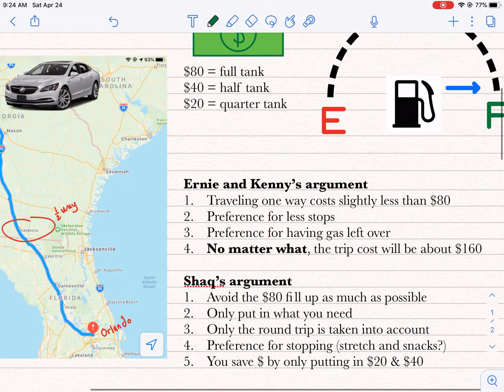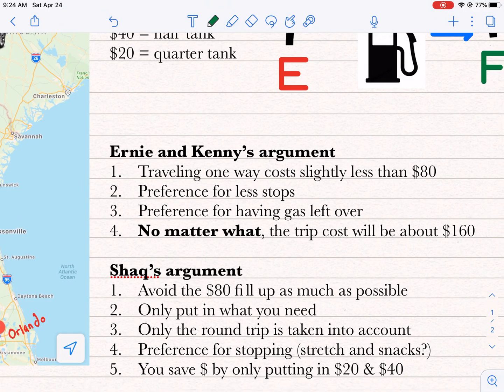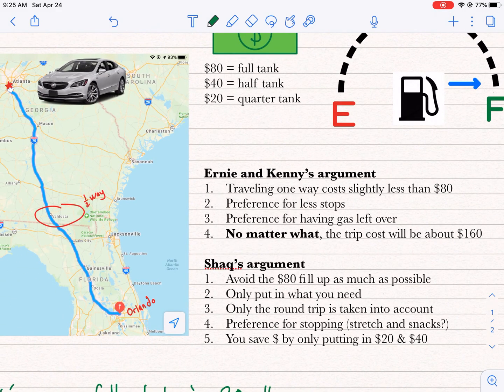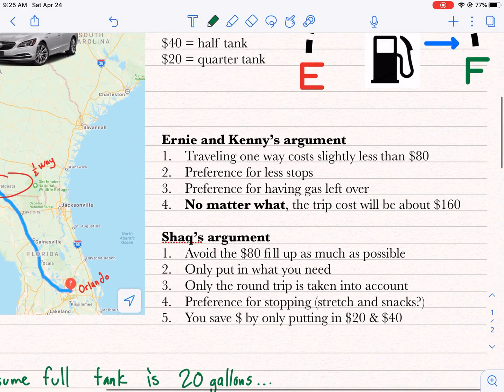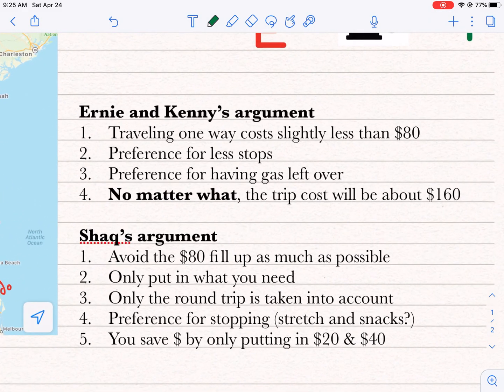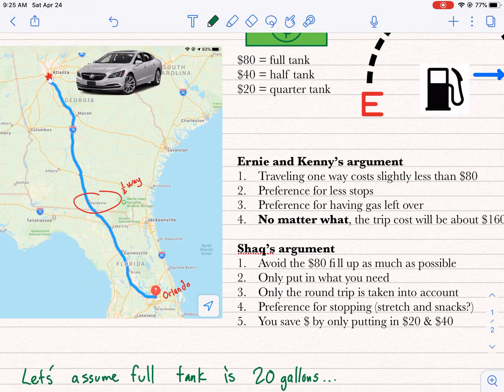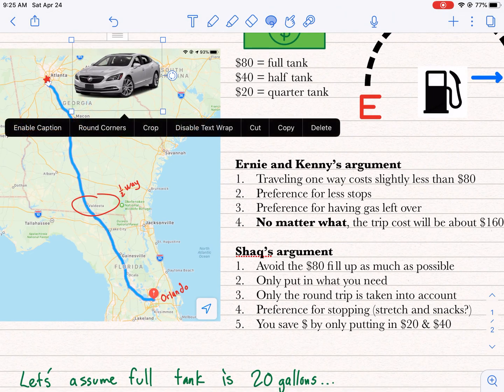Now what is the argument from Ernie and Kenny? They're arguing that traveling one way costs slightly less than $80. The preference is for less stops, and the preference is for having some gas left over once you arrive back home in Atlanta at the end of the round trip. The main thing here is no matter what, the trip will cost about $160. There's no way to get around it.